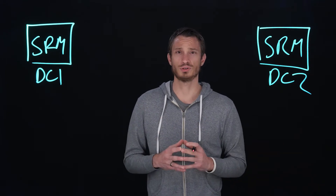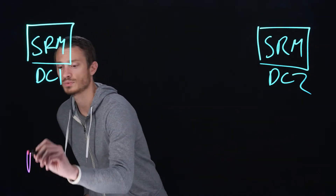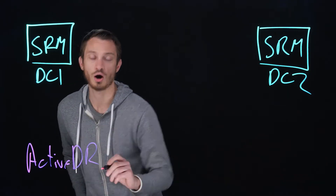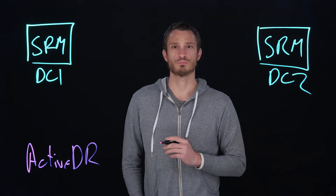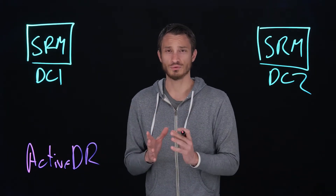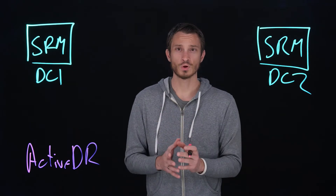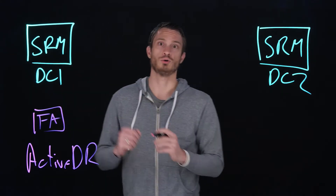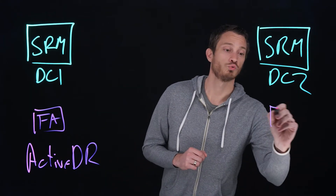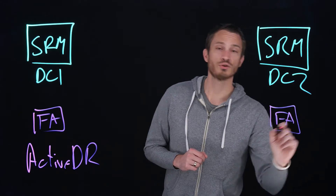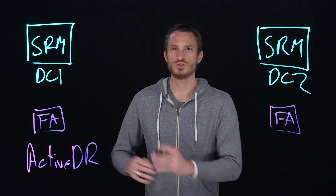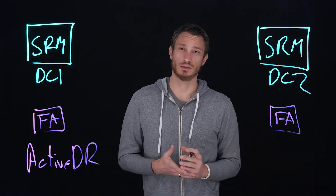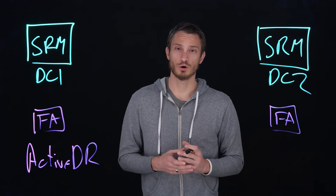The last technology I want to talk about is something called Active DR. Active DR is a near-zero RPO replication solution, which means the replication interval is in the seconds. When data is written to one FlashArray in data center A, it is then replicated to another FlashArray within seconds. So if this site goes down, only a couple seconds of data will be lost for a near-zero RPO.